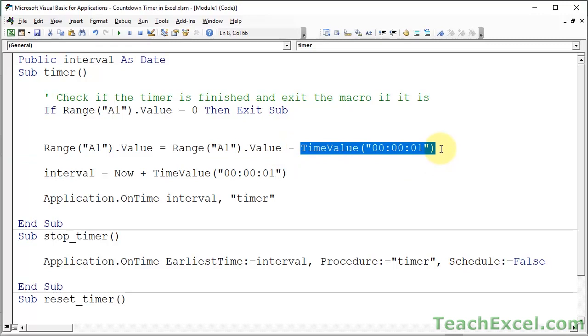And we use the time value function to ensure that we are removing one second. So here I have one second in the format that we used for the reset timer. So hours, minutes, seconds within quotation marks inside the time value function.